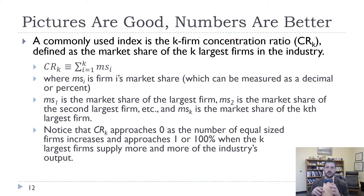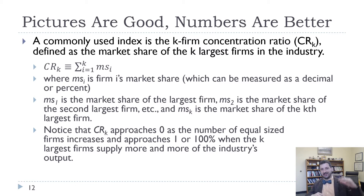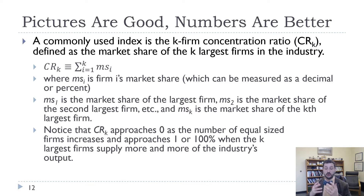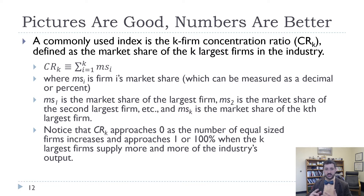In the last video, we talked about the concentration curve and graphing industry concentrations, starting with the largest firm's market share and adding it all up until it gets to 100. We saw that industries with a higher concentration curve are more concentrated. But often what we'll want is a single number, whether we're doing econometric analysis or we just want to compare industries more easily.